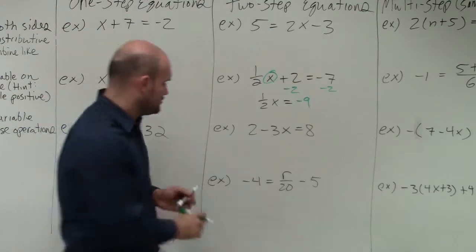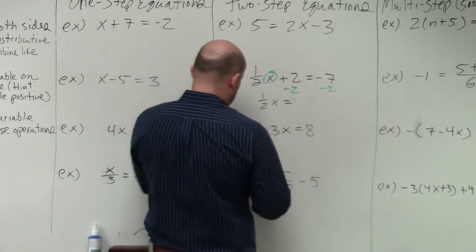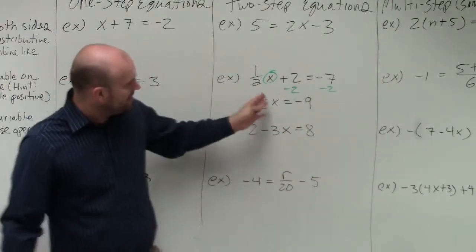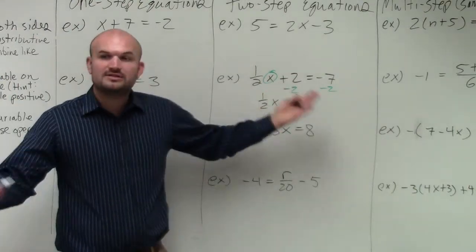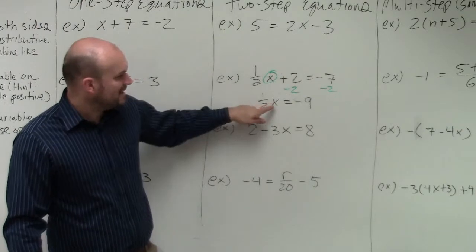Now, I also chose this problem because it deals with a fraction, which is something we're going to be dealing with quite a bit. So you can see here, I have x being multiplied by 1/2. To undo multiplying, you could divide by 1/2, right? Or we could also think about this.